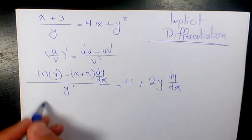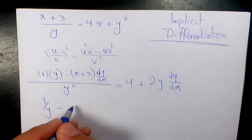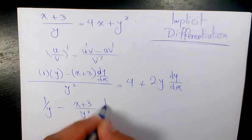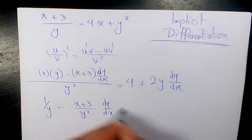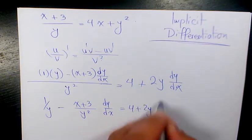y/y^2 is going to be 1/y minus (x+3)/y^2 dy/dx equals 4 + 2y dy/dx.